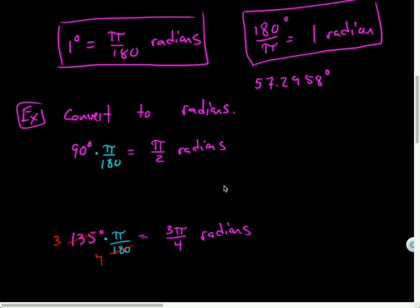What we have here is 45 degrees goes into both 135 and 180. It fits in three times and four times. So I end up with 3π over 4 radians. I've got π radians per 180 degrees. So by multiplying by that, the degree units would cancel out and I'd be left with just radians.